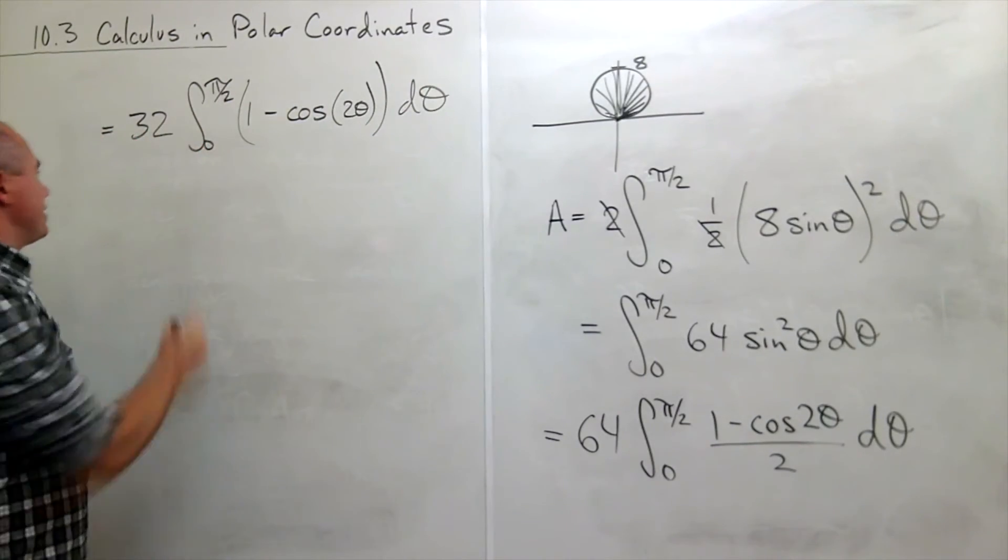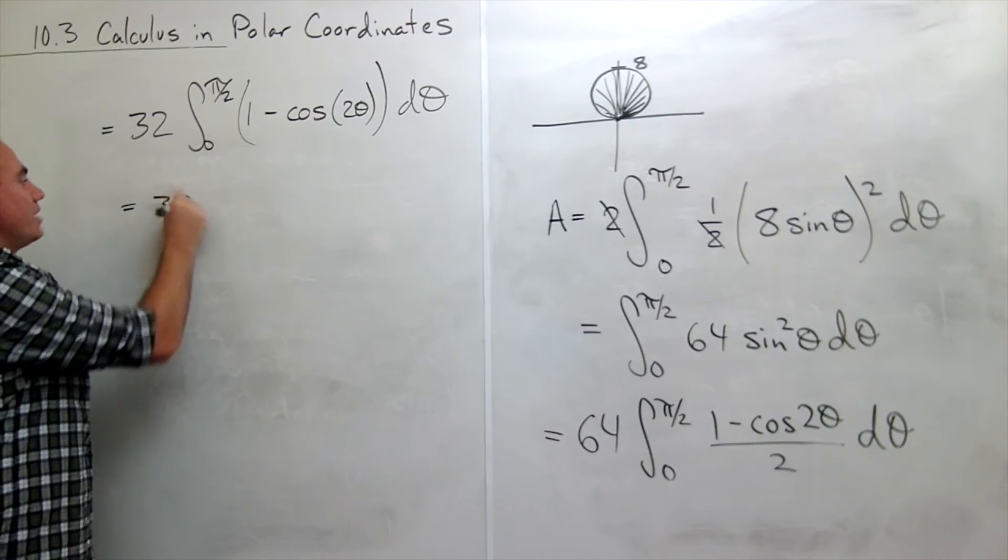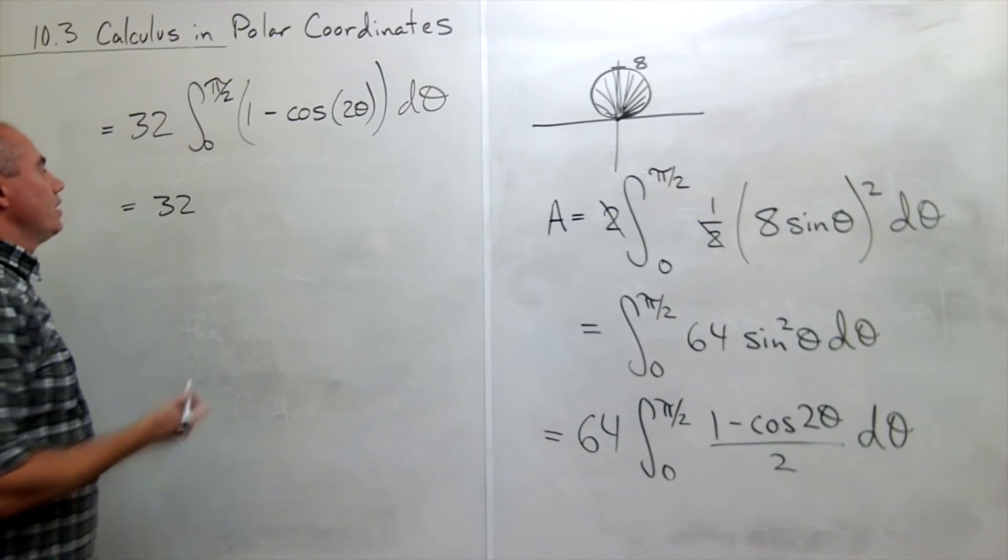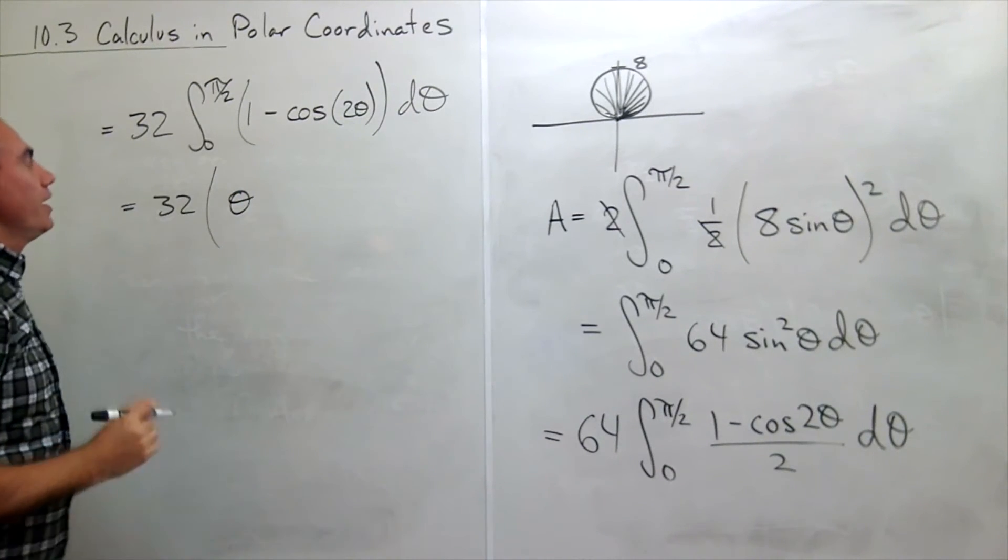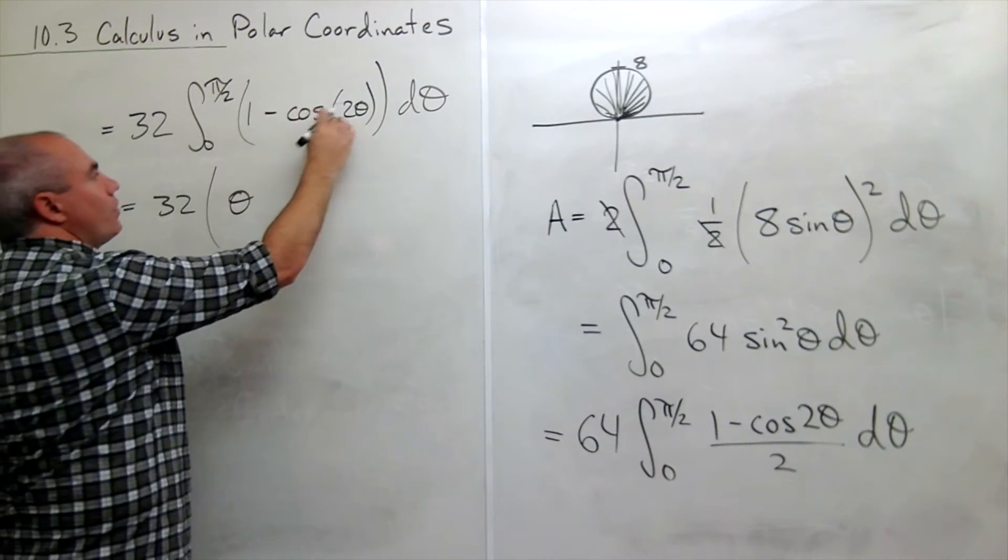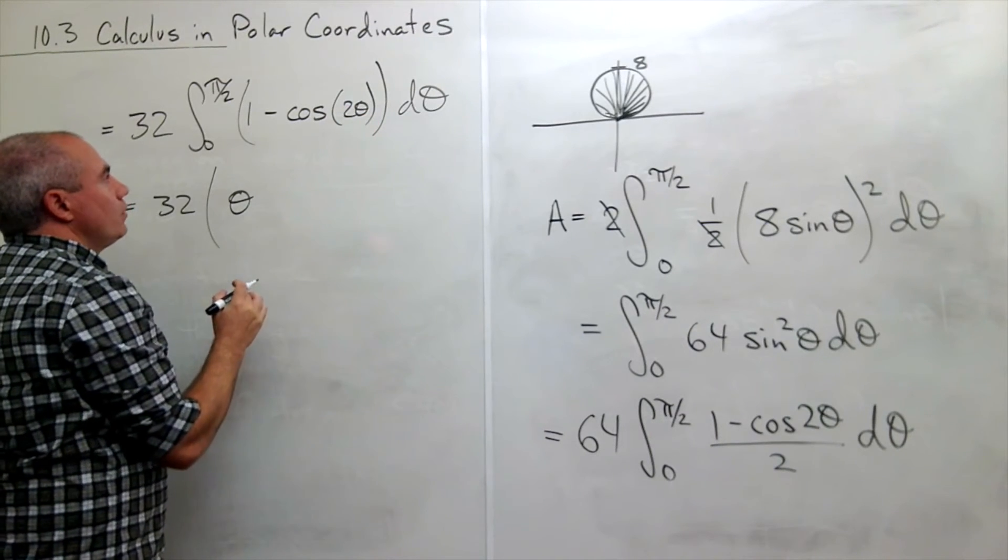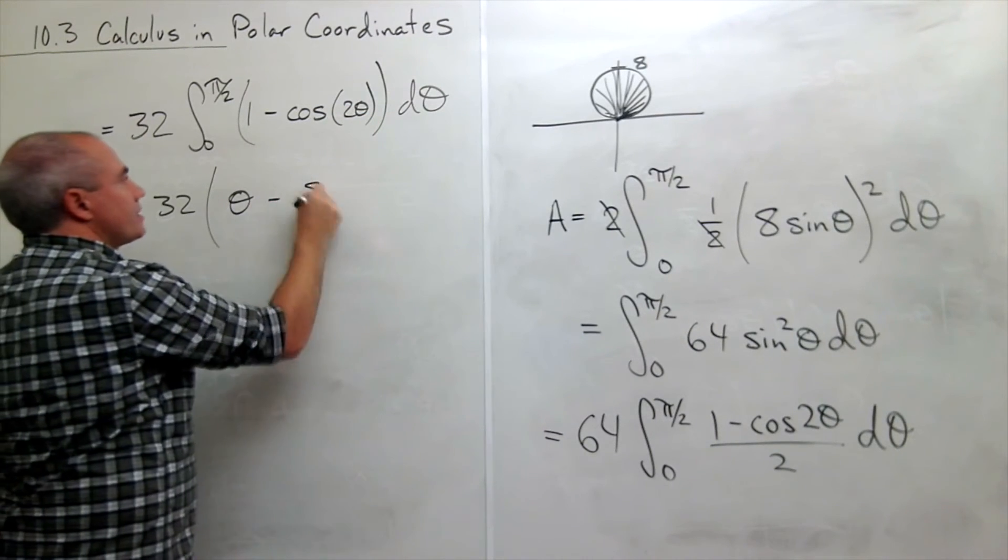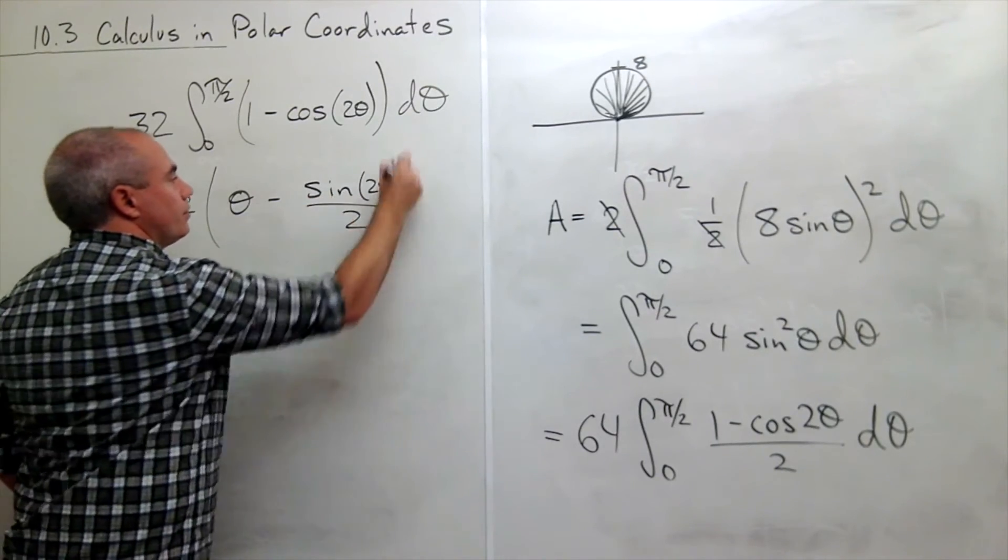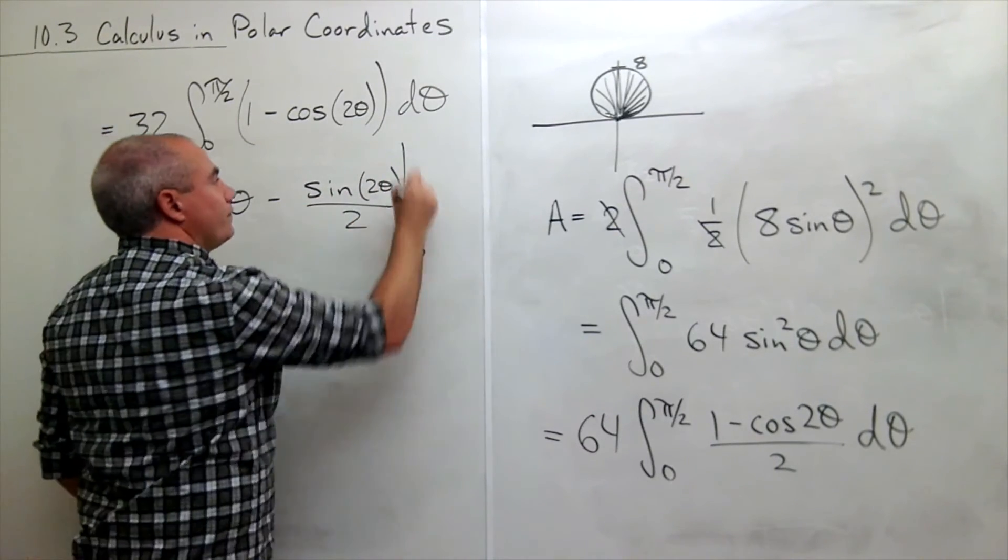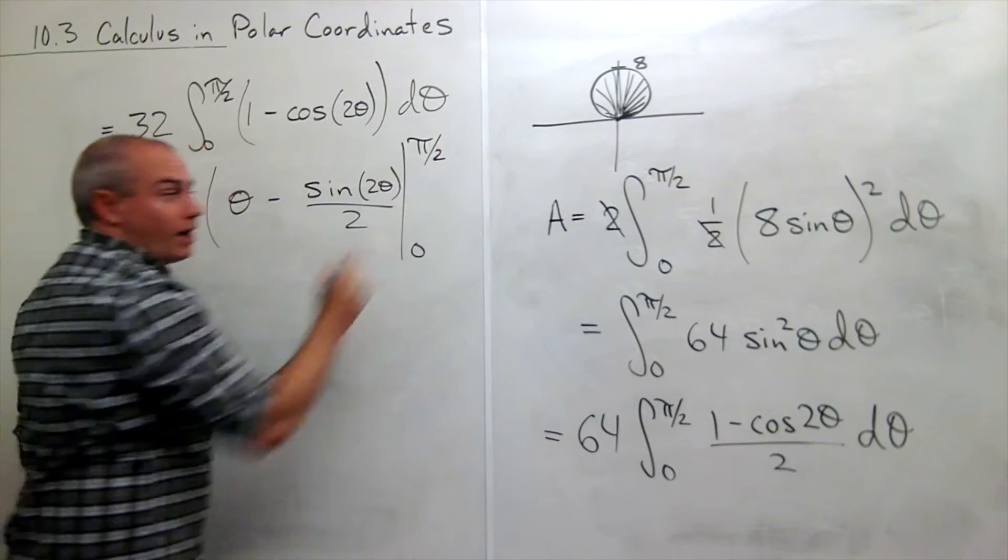Now I'm ready to take an antiderivative. I still have this 32. I take an antiderivative. Antiderivative of 1 is theta. Antiderivative of negative cosine of 2 theta would be minus sine of 2 theta divided by 2. All of that evaluated from 0 to pi over 2.